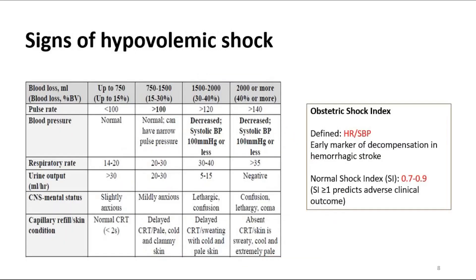This table shows the vital signs and estimated amount of blood loss. We should look out for signs of hypovolemic shock. The obstetric shock index is defined as heart rate divided by systolic blood pressure, and it reflects physiological changes in the cardiovascular system during pregnancy. It may be useful in identifying significant blood loss earlier before any changes in systolic blood pressure, thereby improving patient outcome.